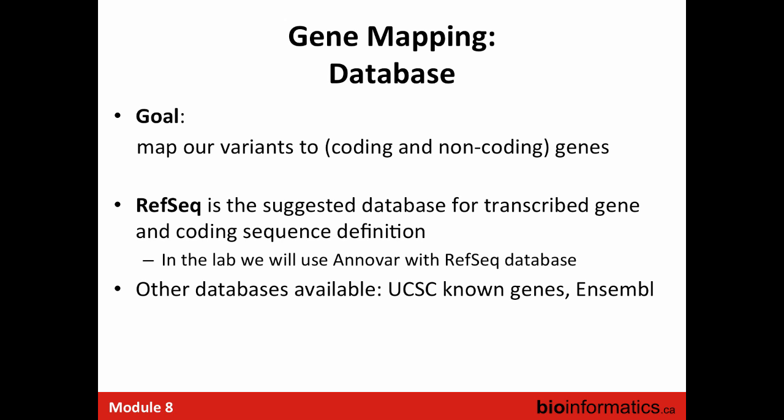To map variants to coding and non-coding genes, a reference nucleotide database is needed. ANNOVAR uses RefSeq, one of the traditional suggested databases for transcript and coding sequence definitions. Other options include UCSC and Ensembl, each with their own genome browser — the choice depends on personal comfort. RefSeq is highly integrated with NCBI resources, making it very useful. Ensembl is a good European tool, though interface changes have altered the default feature set.